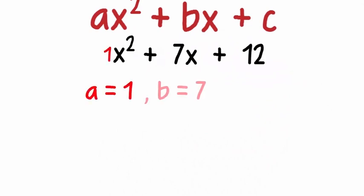a will equal 1, b will equal 7, and c will equal 12. One of the ways in which we factorize polynomials is by splitting the middle term. The technique is easy.